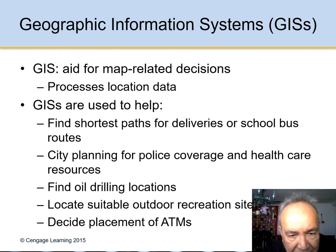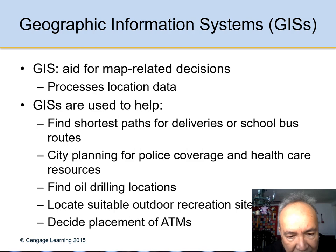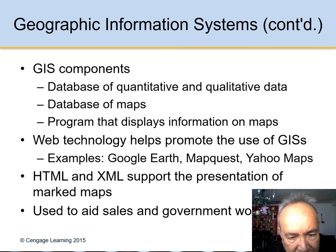Geographic Information Systems, or GIS, are used for things like navigation — when driving, the system tells you the best route to your destination. It is often better to follow it because the system has already collected information about traffic and road conditions.